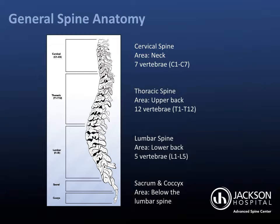The sacrum forms the base of the spine, and the coccyx, also called the tailbone, allows for the attachment of muscles, ligaments, and tendons. As a unit, the spine is responsible for providing support, but also allowing movement and flexibility for our bodies while protecting the spinal cord.